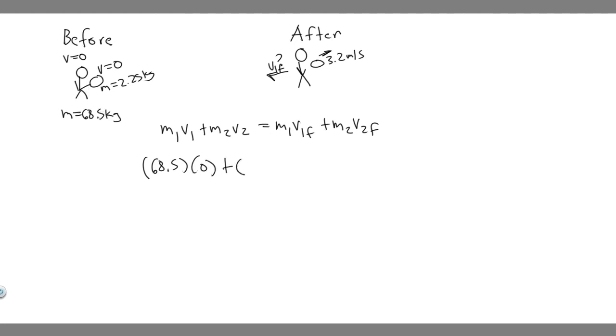Plus M2, which is 2.25 multiplied by V2, which is the velocity of the tool, which is zero. So realistically, this whole side is zero.